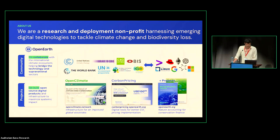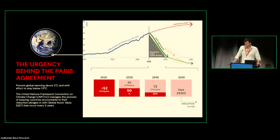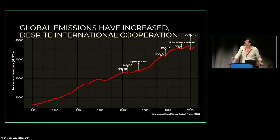This is a scary slide — that's why it's in black and red. There's a huge challenge, what I try to call the defining challenge of our generation: trying to reduce emissions and stay below the Paris Agreement goals of two degrees. That means reducing emissions by 50% in less than seven years. We're not doing very good progress on that in spite of a lot of collaboration. Maybe COVID was the best progress we had so far.